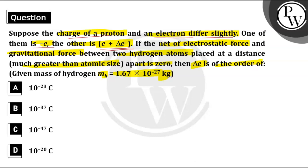And now we are considering two hydrogen atoms which are kept at a certain distance apart. And now if the net of electrostatic force and gravitational force between these two hydrogen atoms is zero, then what is the value of delta E?